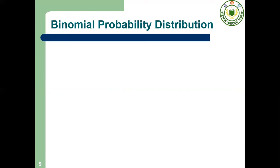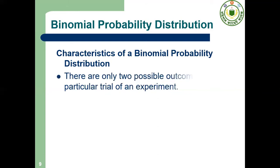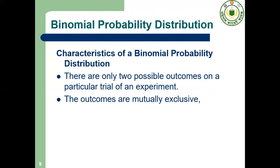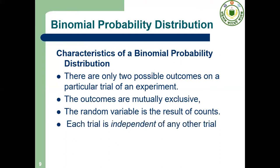Dear cadets, now binomial distribution. The characteristics of binomial distribution: number one, there are only two possible outcomes, that is success and failure. Number two, the outcomes are mutually exclusive. Number three, each trial is independent of each other.